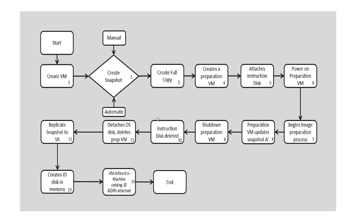These are the steps to prepare an MCS-based machine catalog — 14 steps are involved in this process. First, we need to create the master image. In the master image we need to install the VDA and required applications to make a complete VM build. Once the installation is completed, we need to create a snapshot. We can do this manually, or alternatively, while creating the machine catalog, MCS itself will take the snapshot automatically. However, the automatic naming convention may cause confusion in future, so it is better to take the snapshot manually so we can give it a name as per our requirement.